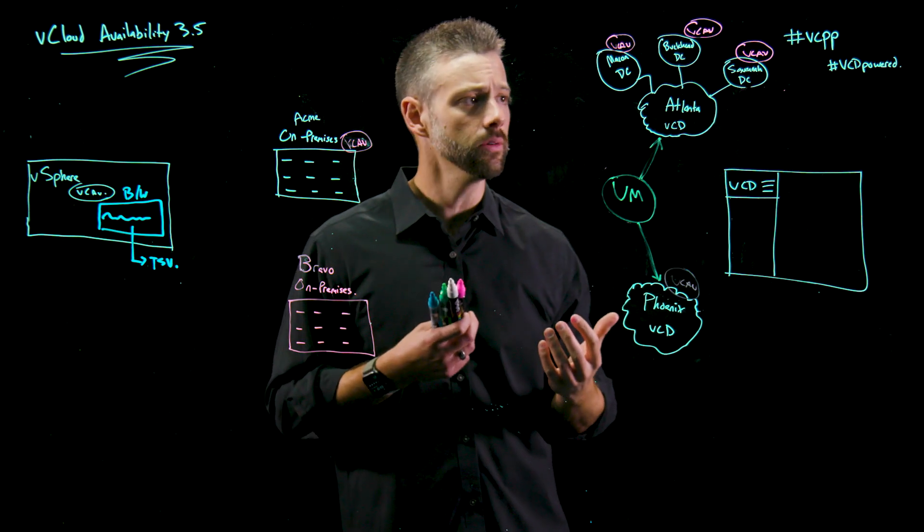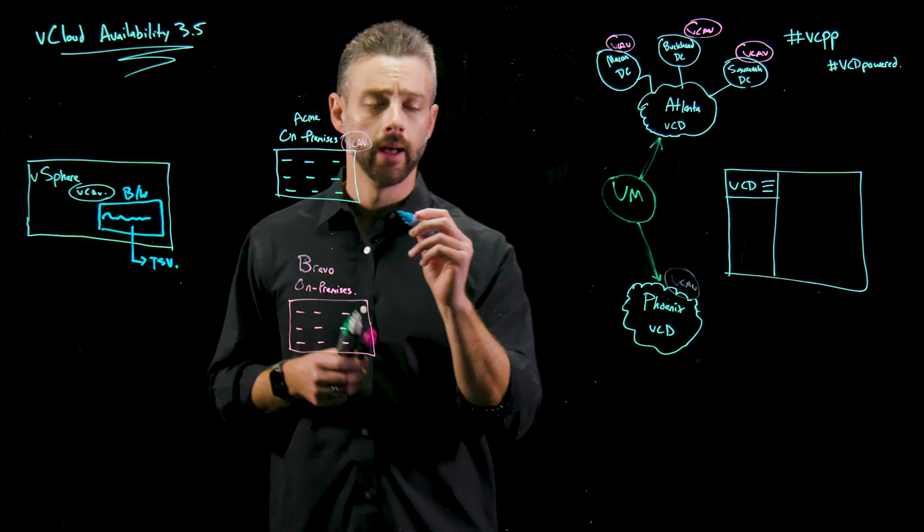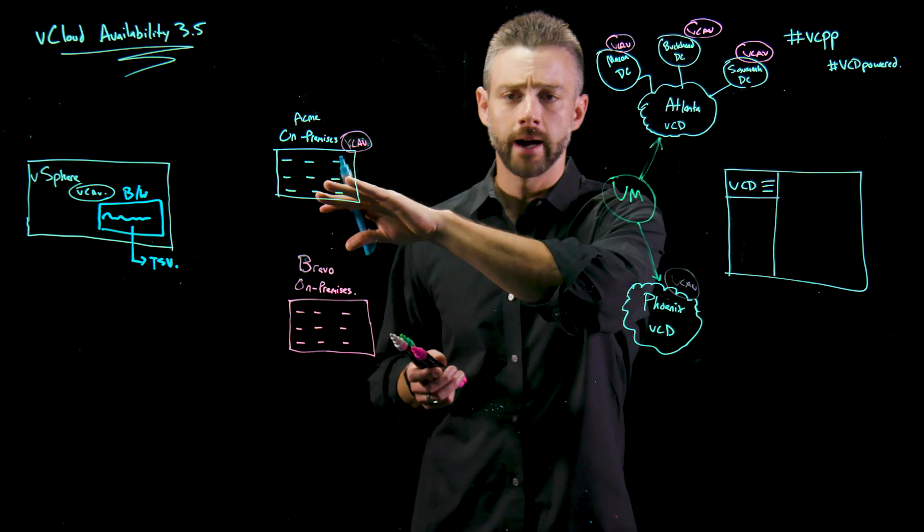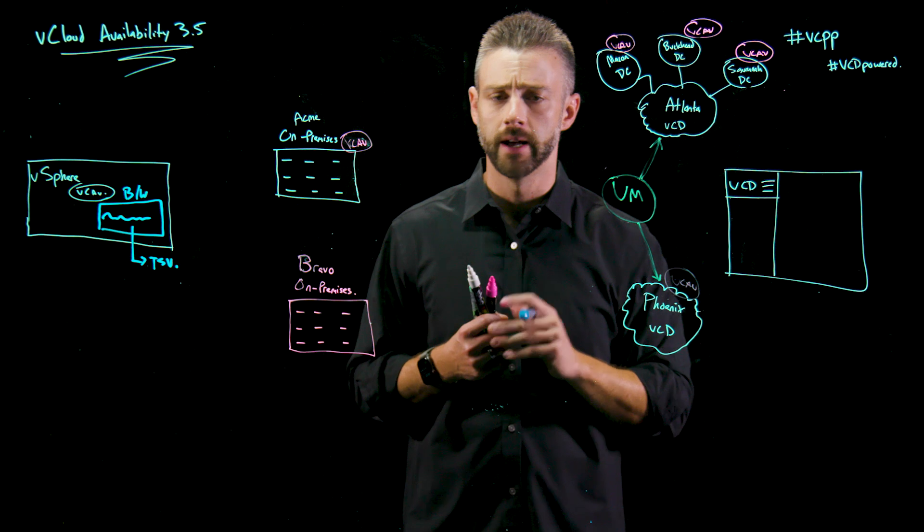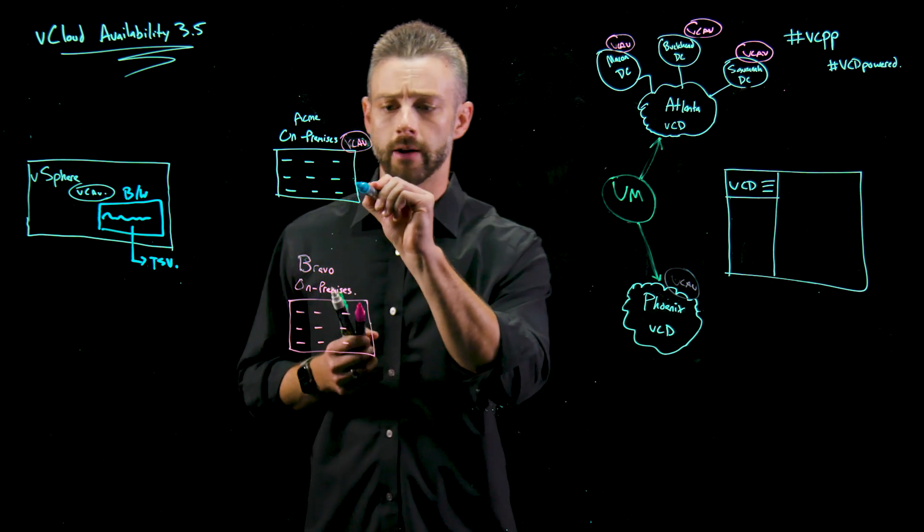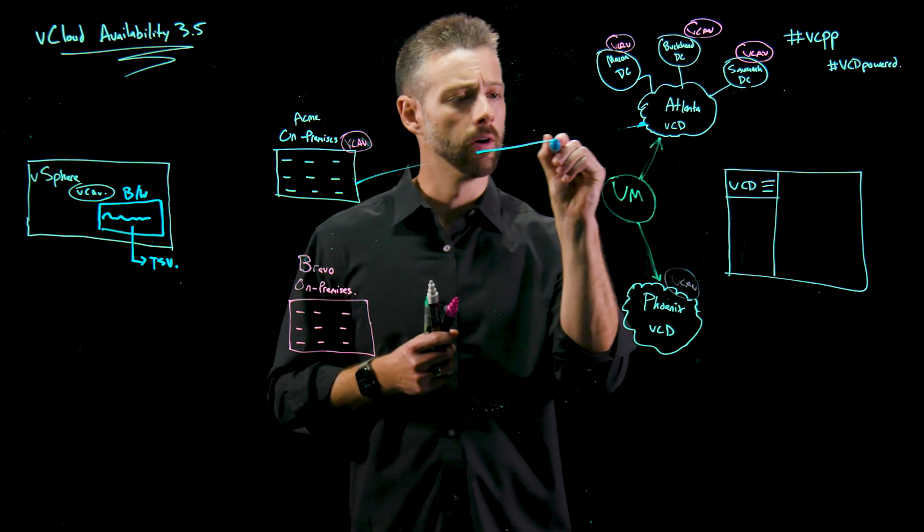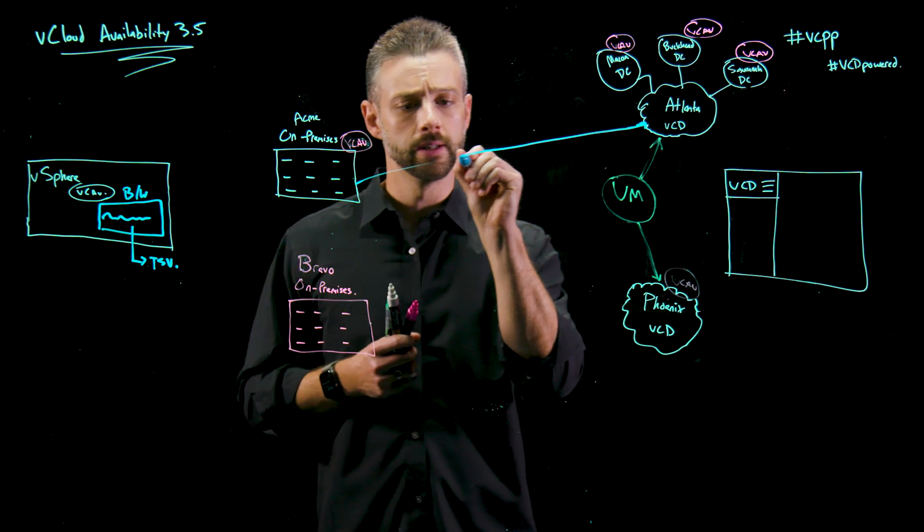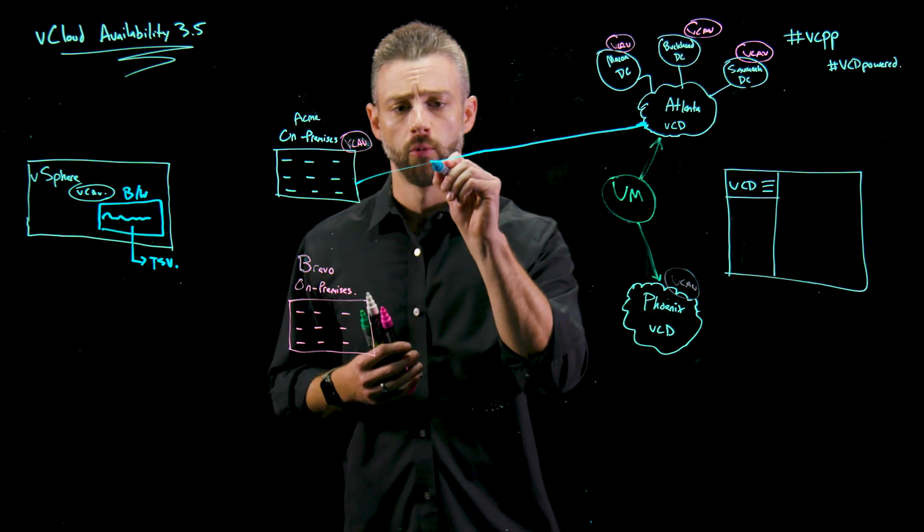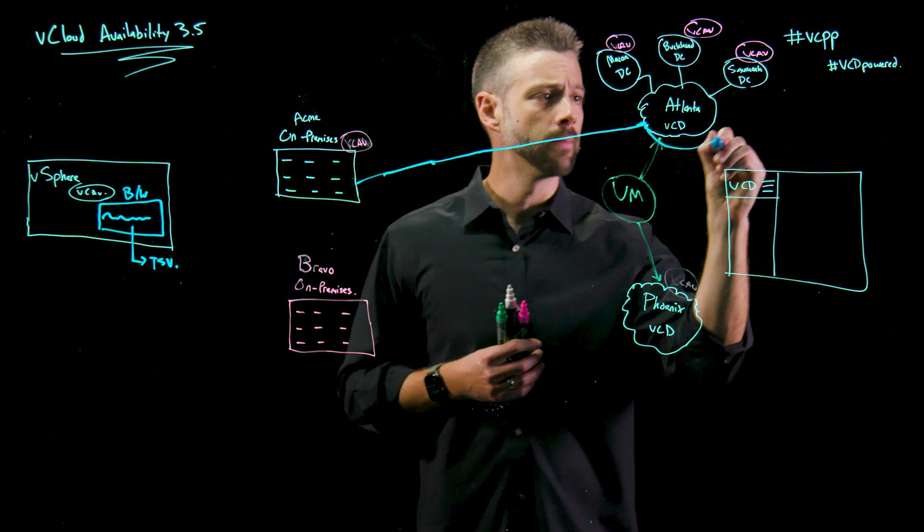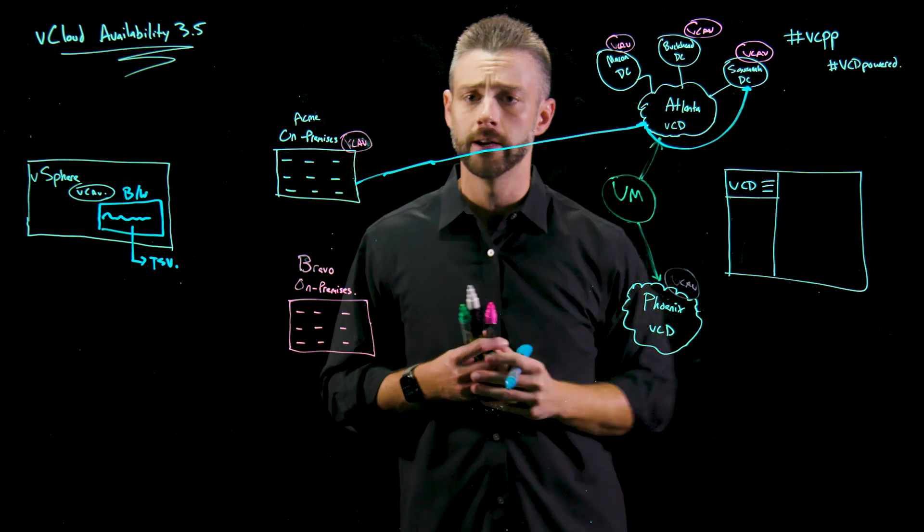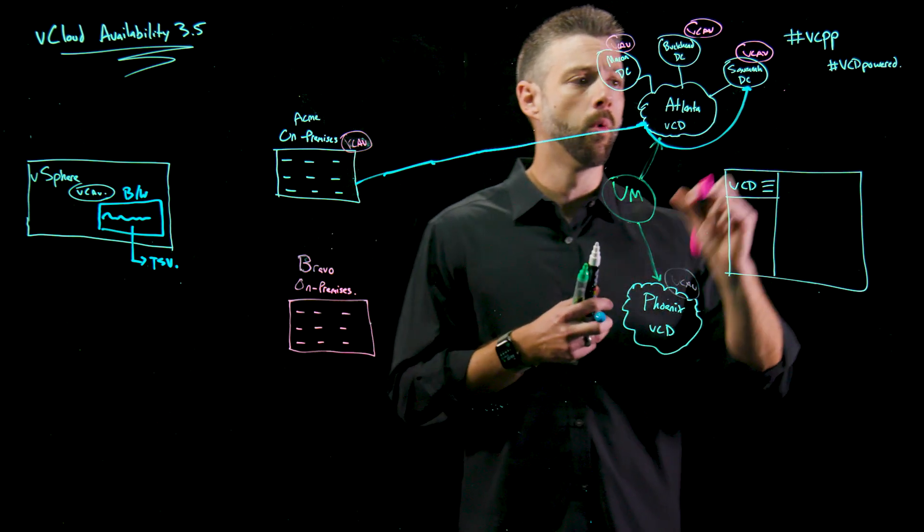Now, what this allows us to do now is optimal traffic routing. This is very important because if I had that 3.0 instance deployed to Macon, but I had Acme that wanted to replicate to Savannah, I would have to traverse, hit Macon first, and then send that traffic over to Savannah. Now with 3.5, we still send the control traffic over to the vCD instance because that's where all of our roles-based access control resides and what are the policies established for my tenant Acme. But then all replication traffic is sent to Savannah where we have a respective vCloud Availability stack deployed for Savannah.